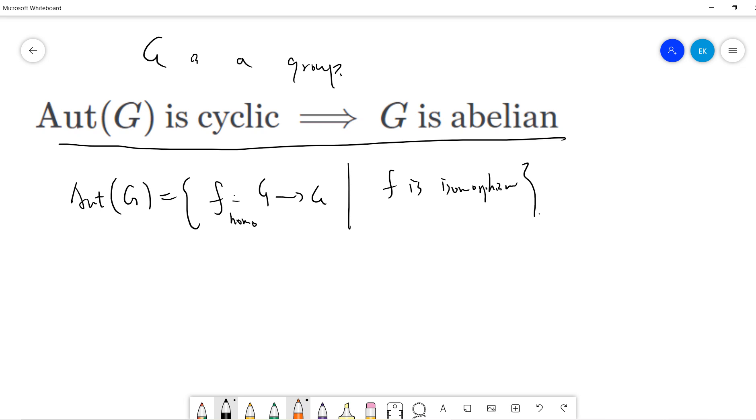All the automorphisms of G form a group. This theorem tells you that if Aut(G) is cyclic, then G is abelian.